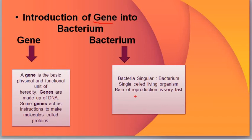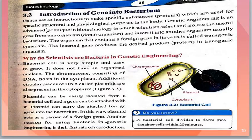We try to make copies of the bacteria. When we make copies of the bacteria, the result is protein production. This protein in the biotechnology field is used for different purposes. Now open your book at page number 35. By the help of the book, we will discuss gene insertion into bacterium.